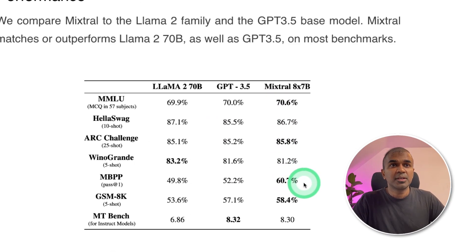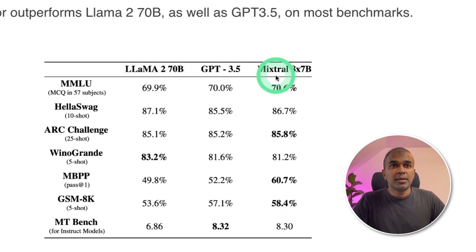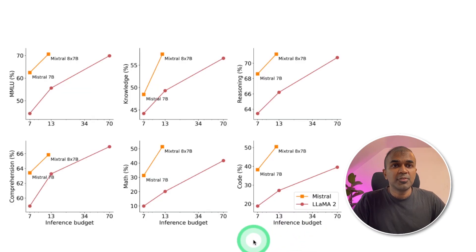Here you can see the performance benchmark. In regards to Llama 2, it's beating on every benchmark except Winogrande, which is also not too far. Similarly for GPT-3.5, it beats on mostly every benchmark except MT-Bench, which is also very close. If you see the inference budget, Llama 2 is in this red line. But if you see Mixtral 8x7B, it's at the top.